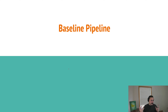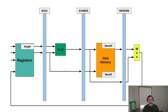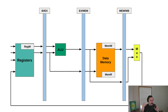Let's take a zoomed-in look at part of our pipeline — specifically the part where we would want to implement forwarding or bypassing. This is a simplified version of our pipeline architecture with some noise stripped out, like control signals and the instruction fetch stage. We have our fetch stage where we're reading out values from the register file, our execute stage where we're computing something with our ALU, our memory stage where we're accessing memory, and then our writeback stage where we're updating our register file by writing to a register.